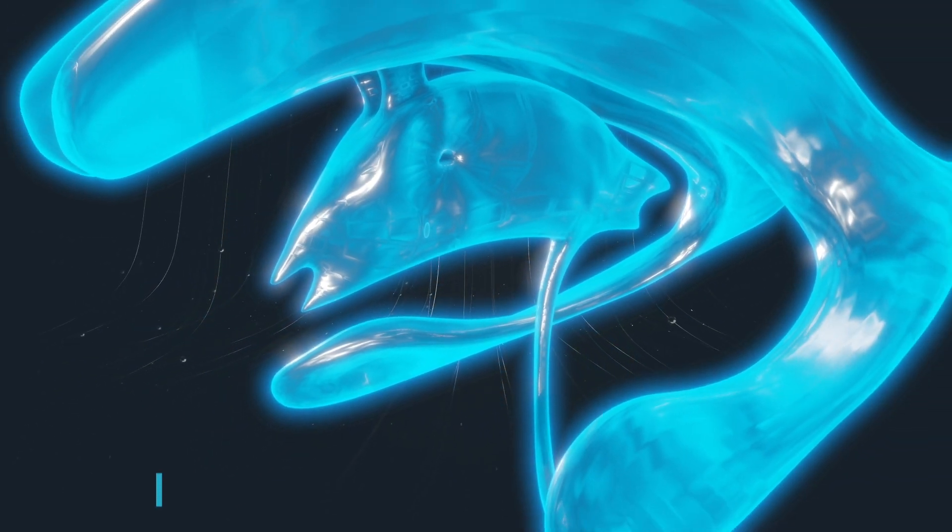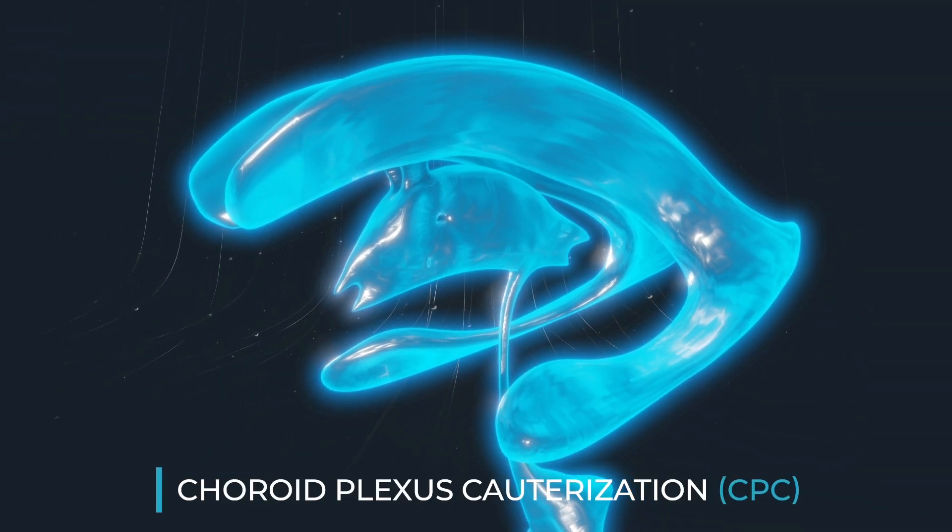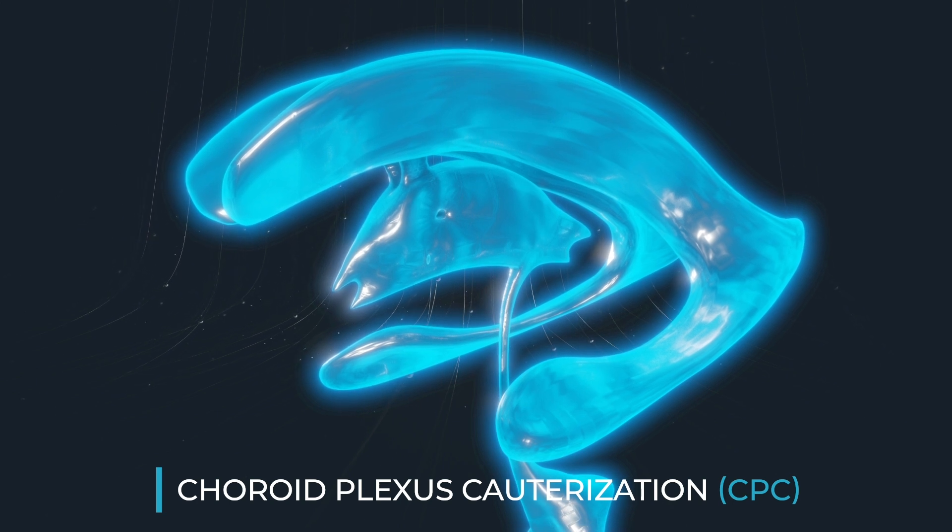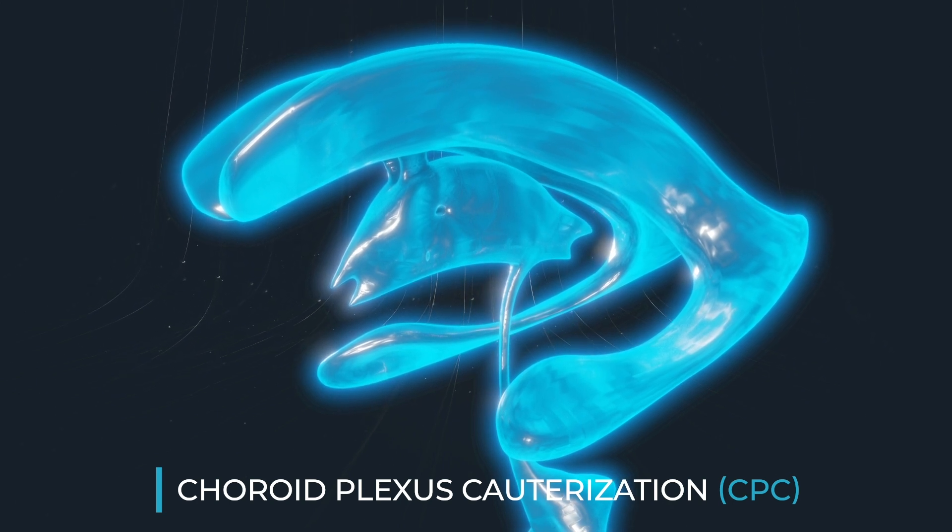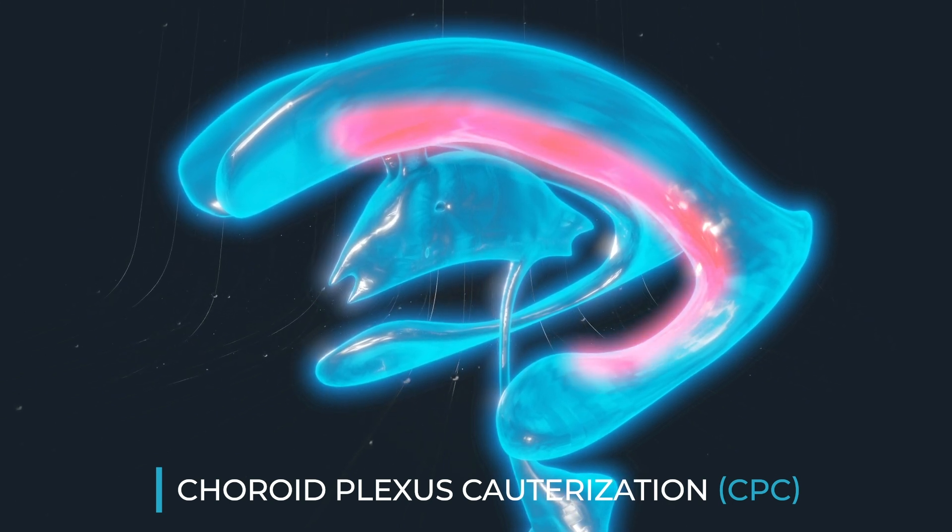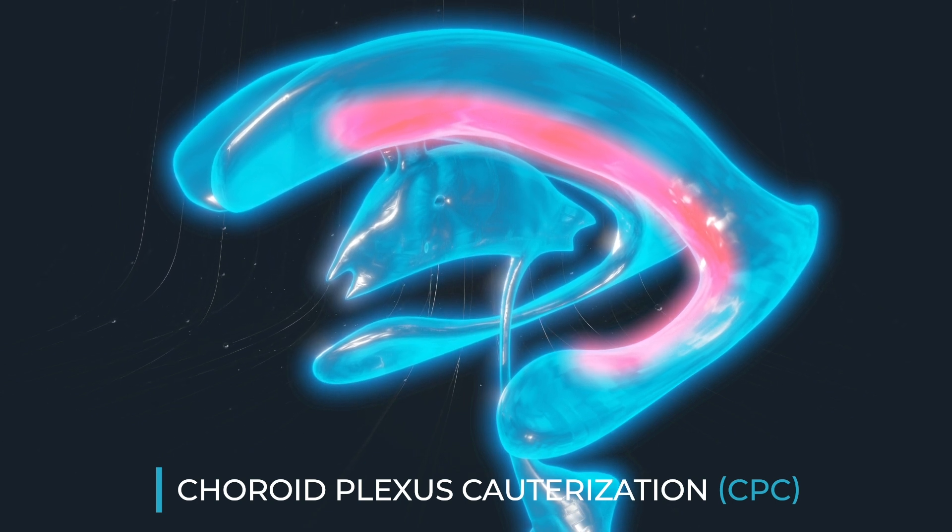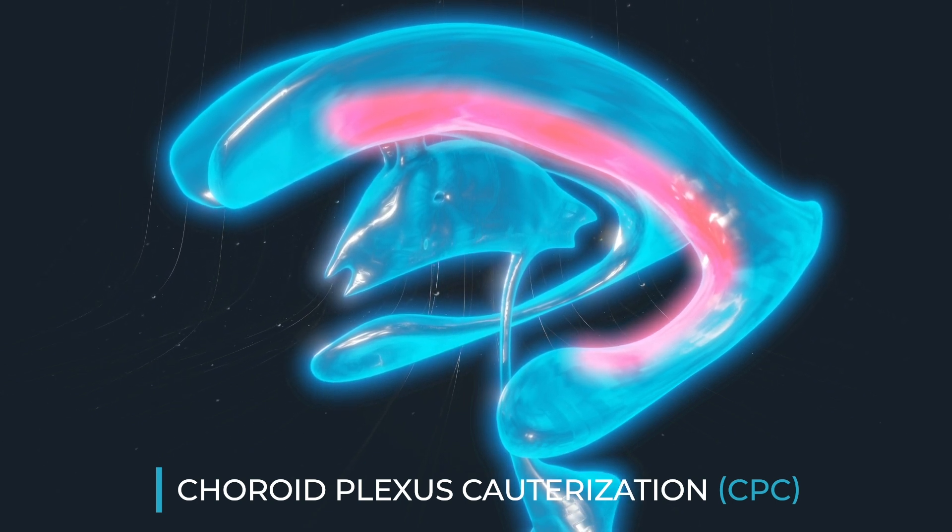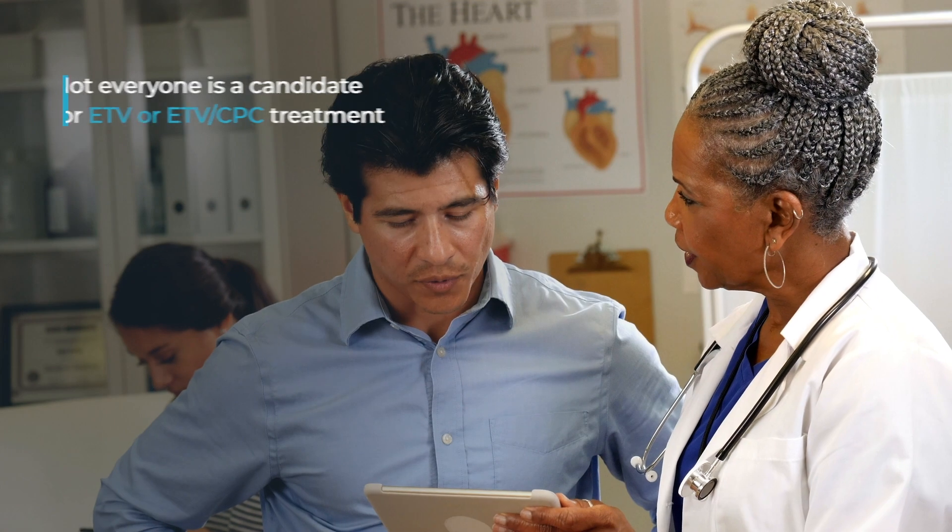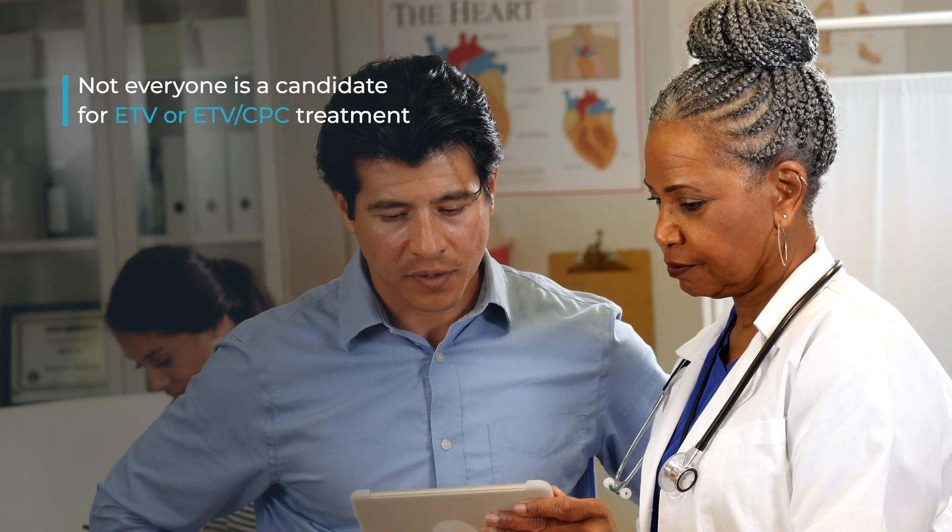Some ETVs include a procedure called choroid plexus cauterization or CPC. Once inside the brain, the neurosurgeon uses a device to burn or cauterize choroid plexus tissue in the ventricles to reduce the amount of fluid being introduced into the lateral ventricles. Not everyone is a candidate for ETV or ETV-CPC treatment.